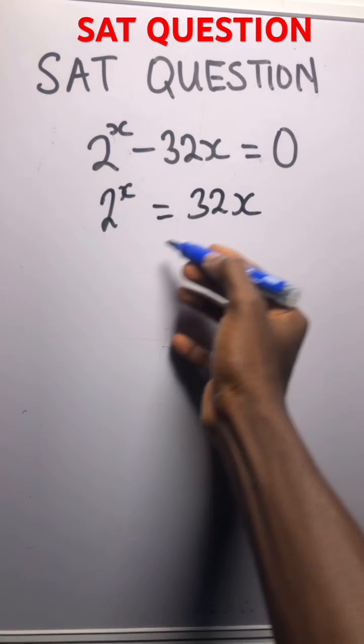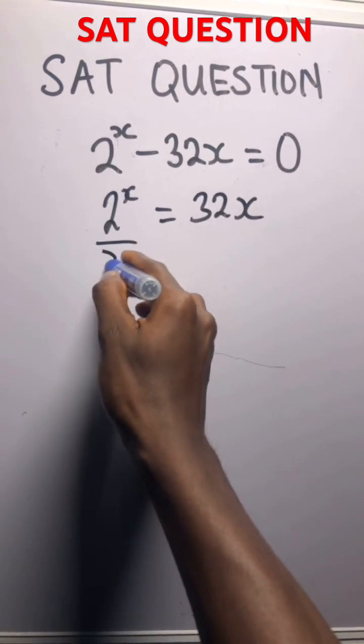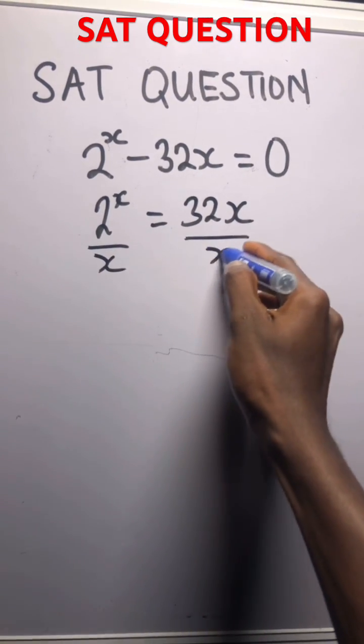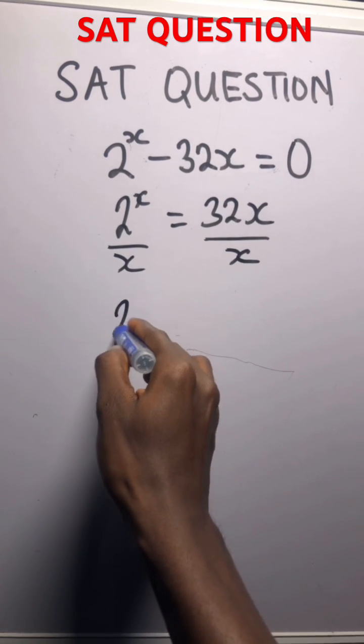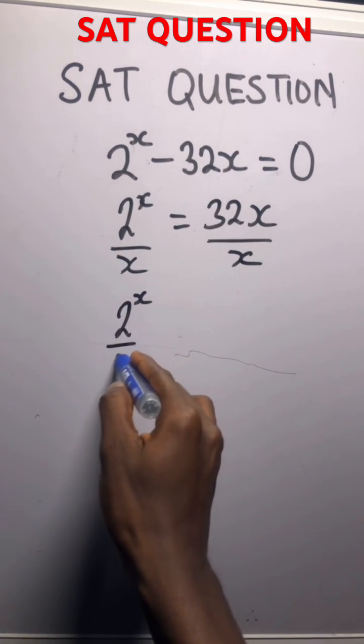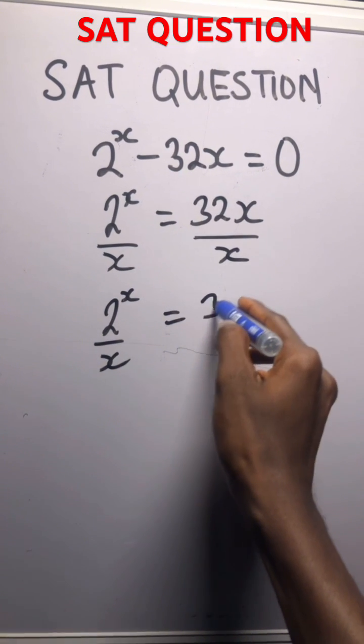So next thing is you divide on both sides by x. You're left with 2 to the power of x over x equals 32.